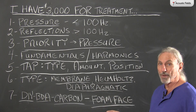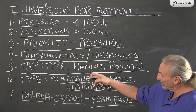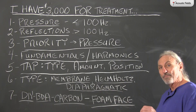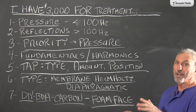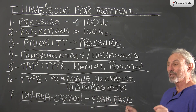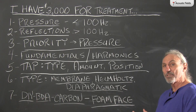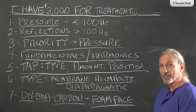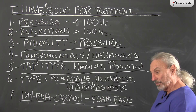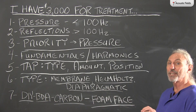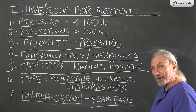We have three types: Membrane, Helmholtz, and Diaphragmatic. Membrane and diaphragmatic are related. Helmholtz is that device with the slit, chamber, and air — it's frequency specific, hard to make and tune, and you need a lot of them because it covers just a narrow band, maybe 40 to 45 cycles. Membrane and diaphragmatic are more broadband, covering a lot of frequencies — a little bit less at each octave, but you get more coverage and a wider range.